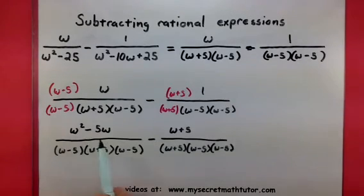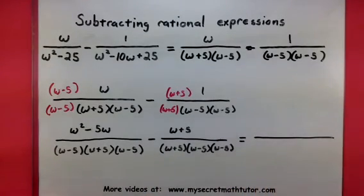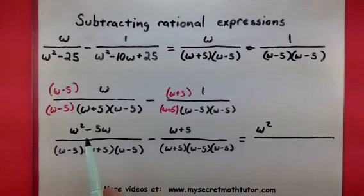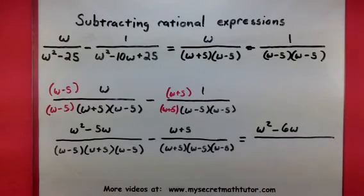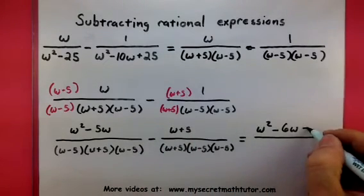So w squared, can I subtract any other w squareds? Well, it looks like there's no other w squareds to combine that with, so that will just stay as a w squared. And then I have a minus 5w minus w. Well, I can do something there. That will be a minus 6w. And it looks like there's nothing else to subtract, so I just have this minus 5 left over.